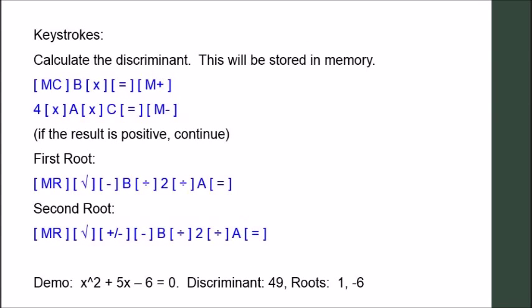Start off with calculating the discriminant, which will be stored in memory. Memory clear. B times equals memory plus. 4 times a times c equals memory minus. If the result is positive, continue. The first root will be found by memory recall square root minus b divide 2 divide a equals. The second root will be found by memory recall square root chain sign minus b divide 2 divide a equals.